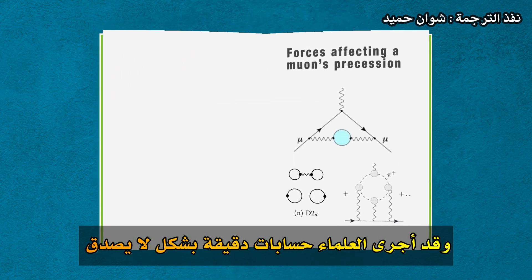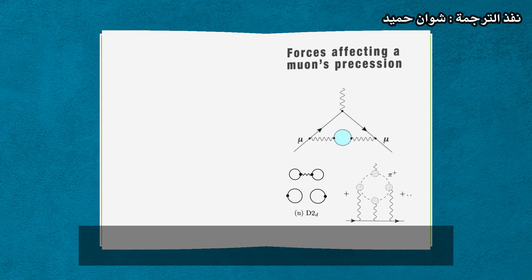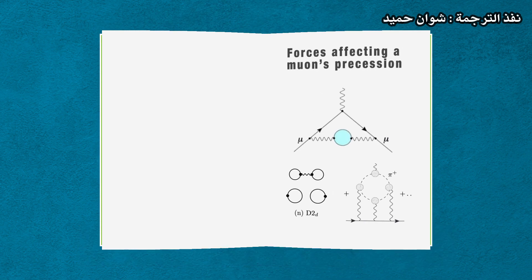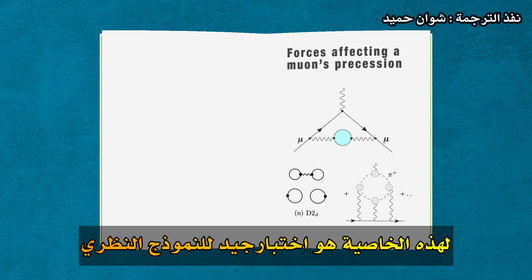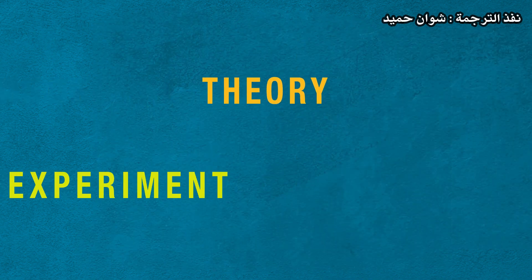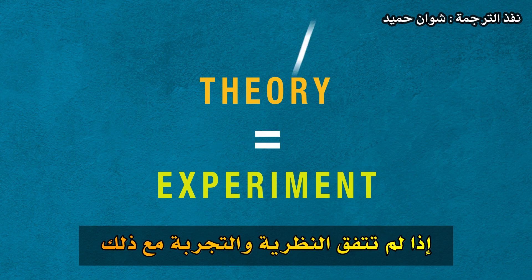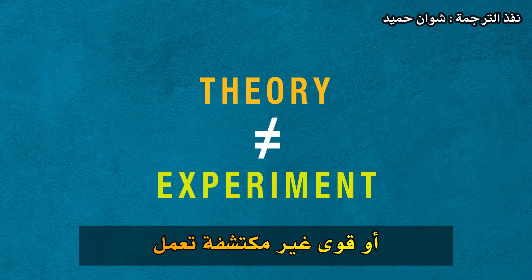Scientists have made incredibly precise calculations of how muons should move. So making an equally precise measurement of this property is a good test of the theoretical model. If theory and experiment don't agree, then there must be undiscovered particles or forces at work.